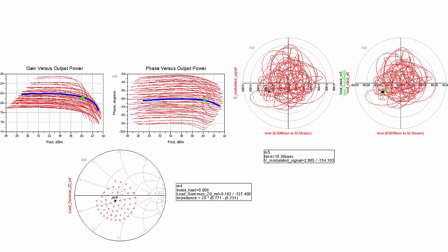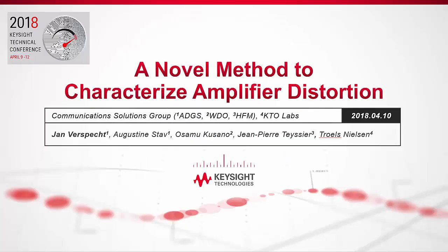We compute the error vector magnitude by applying the time record of the modulated signal to the non-linearity, computing the distorted output spectrum, and then using the distortion EVM algorithm to compute the EVM. This algorithm is discussed in various papers from Keysight measurement scientists.